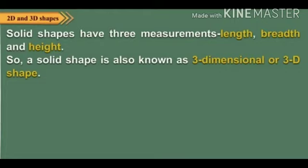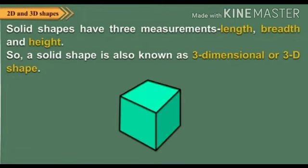Solids have face, edge, corner or vertex. A solid ke vertex hoote hai, face hoote hai, edge hoote hai aur corner hoote hai.